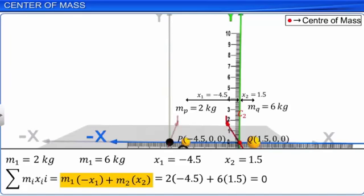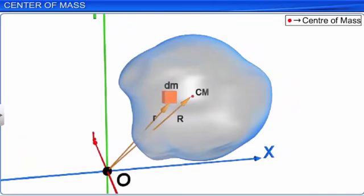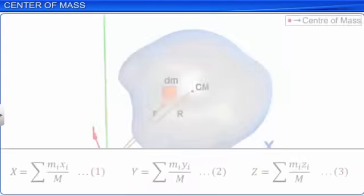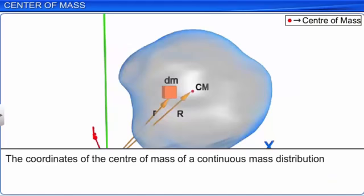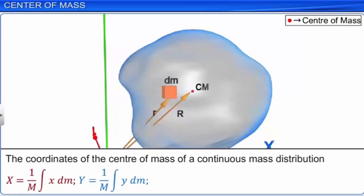When we deal with rigid bodies of continuous distribution of matter, we need to replace the summation symbol Sigma with an integral symbol. The coordinates of the center of mass of a continuous mass distribution are: X = (1/M)∫x·dm, Y = (1/M)∫y·dm, Z = (1/M)∫z·dm, where M is the total mass of the body.